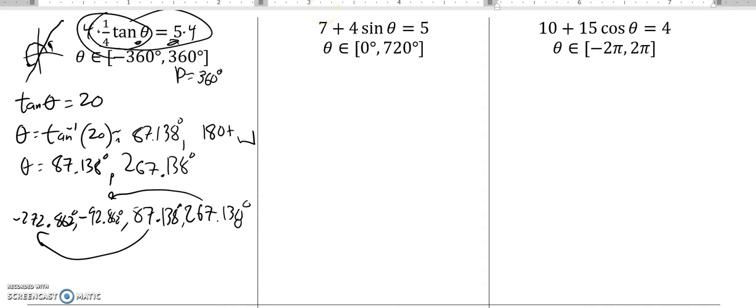Next problem, similar. Degrees, it's 360. So I'm going to solve it out. So subtract 7 from both sides. 4 times sine theta is negative 2. Divide by 4. Sine theta equals negative 1 half. So make sure your calculator is in degrees. And go arc sine and negative 1 half.